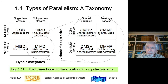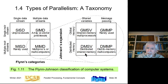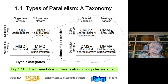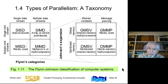MISD — multiple instruction, single data — is rarely used. Because almost everything falls into MIMD, Johnson expanded the taxonomy to classify MIMD computers by whether they use global or distributed memory, and whether they communicate through shared variables or message passing. This gives four subcategories: global memory shared variable (shared memory multiprocessors), distributed memory shared variable (distributed shared memory), distributed memory message passing (distributed memory multi-computers), and global memory message passing (rarely used).